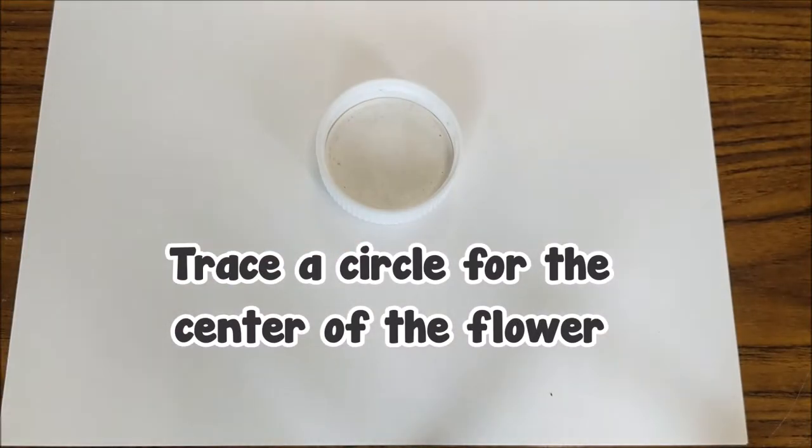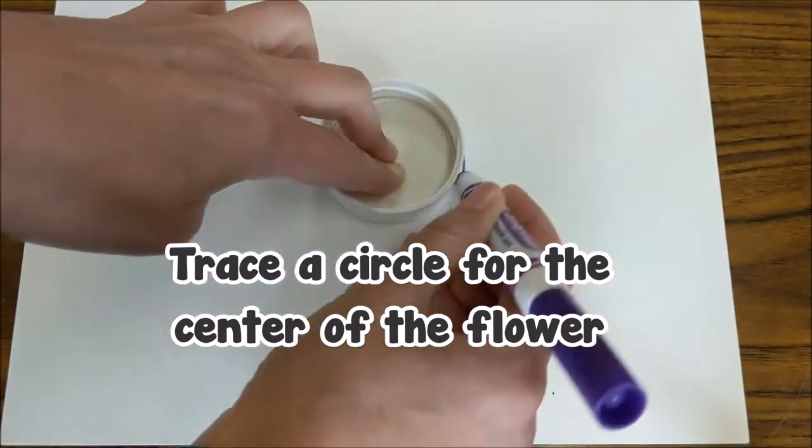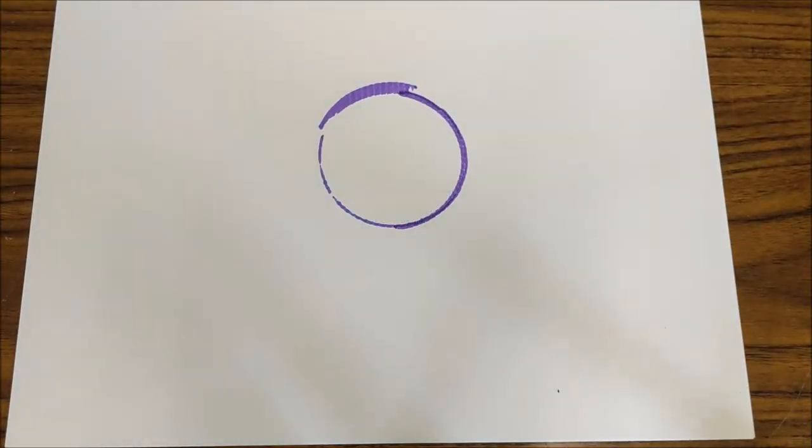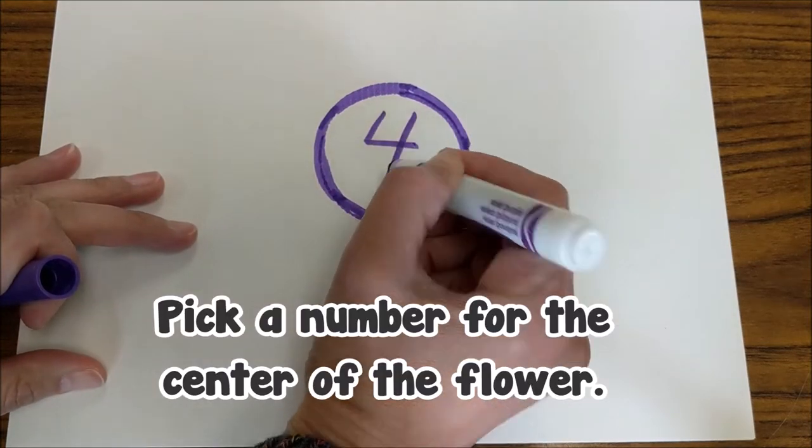We're going to create multiplication flowers. You're going to trace a circle for the center of your flower, choose any color that you want, and then pick a number for the center. I'm going to use the number four.